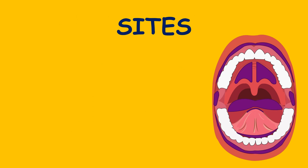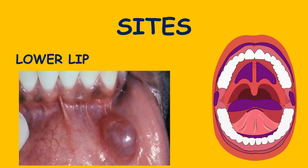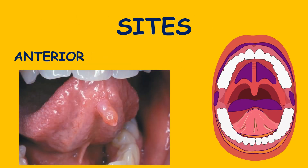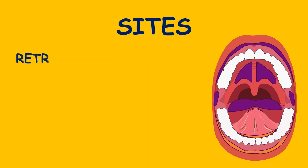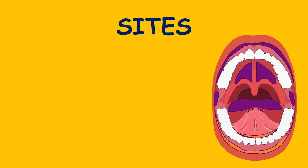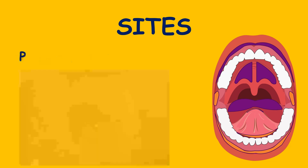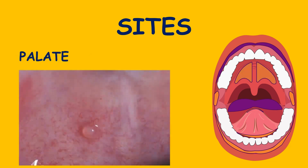The sites for mucocele include the lower lip, floor of mouth, anterior ventral tongue, retromolar pad, buccal mucosa, and the palate.